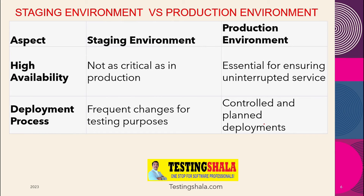High availability is also another key importance for production. The production environment should provide uninterrupted service. In the staging environment, it may not be as critical — even if there is an issue for 30 or 15 minutes, we can recover at staging without a major problem.